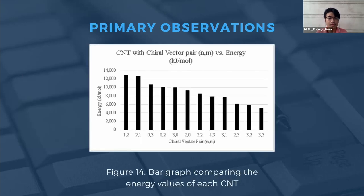Figure 14 shows the chiral vector pairs arranged in order of highest to lowest chemical potential energy, measured in kilojoules per mole. Chiral vectors (1,2) and (2,1) exhibited the highest chemical potential energy per 100 or 102 atoms. Notably, different variants of the same CNT type have different energy values — for example, armchair CNTs (2,2) and (3,3) differ in energy. Also notable is that (0,3) and (3,0) show a significant difference in chemical potential energy despite having the same chiral vector values in reverse order.